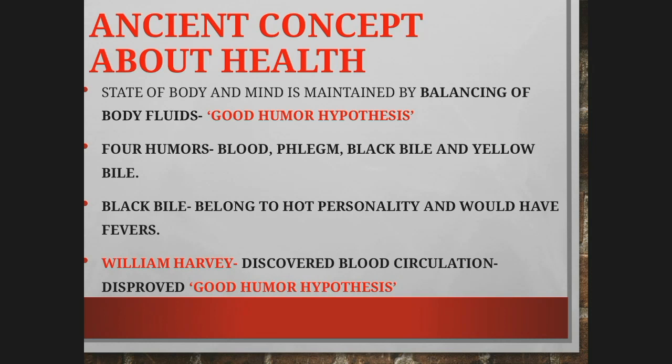According to this hypothesis, four fluids are circulating in our body: blood, phlegm, black bile, and yellow bile. Phlegm is the thicker mucus coughed up from the respiratory tract during illness or irritation. It was believed that persons having more black bile would have high body temperature and frequently face fever. They also believed women are basically calm due to the presence of yellow bile, and black bile is removed by regular menstruation.